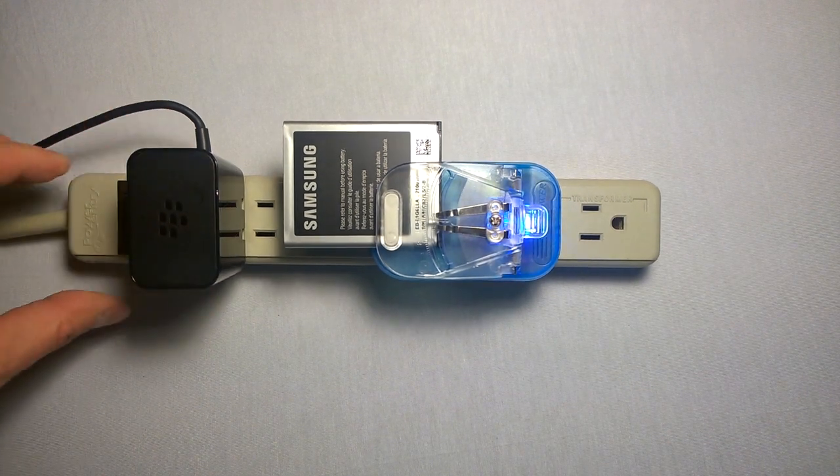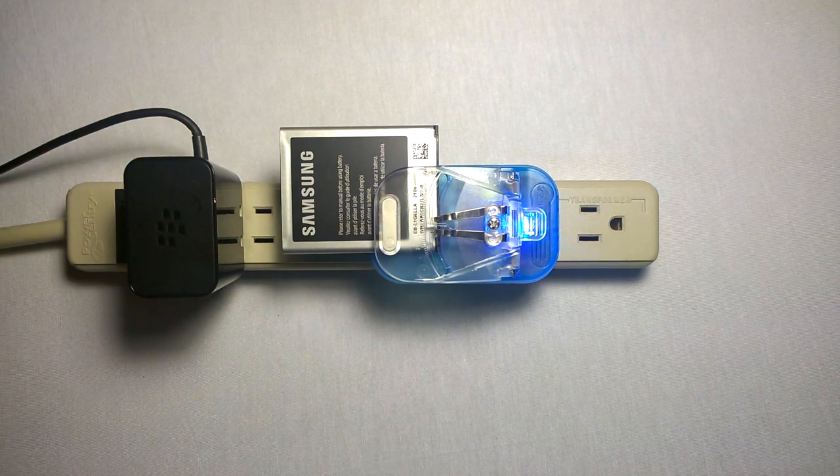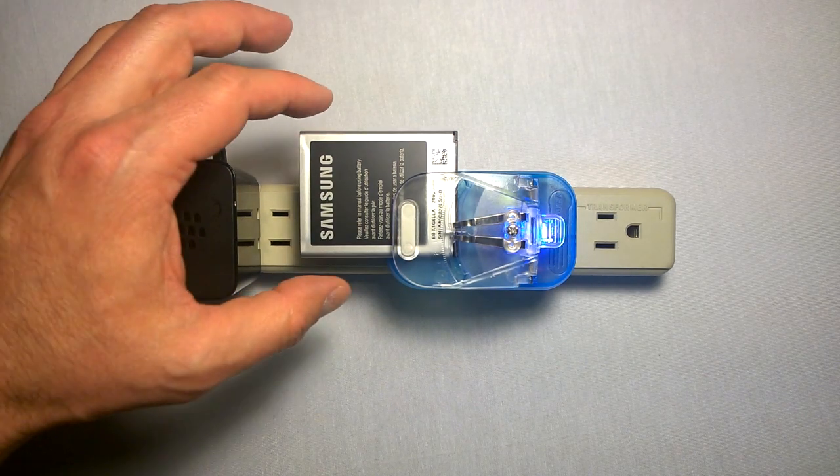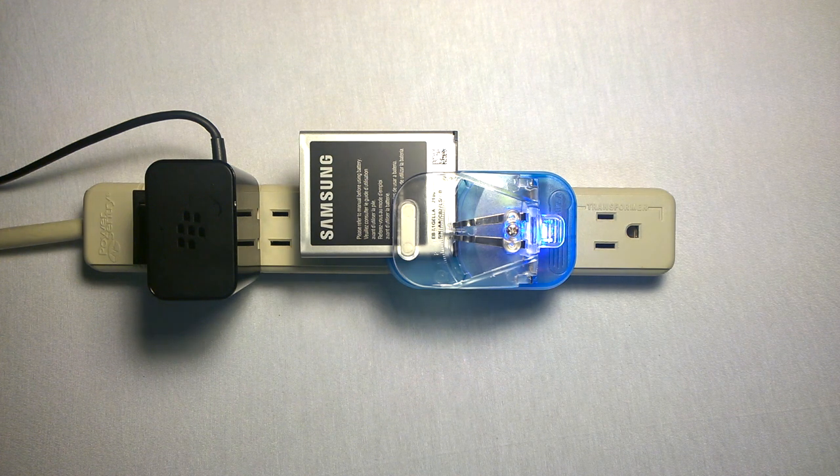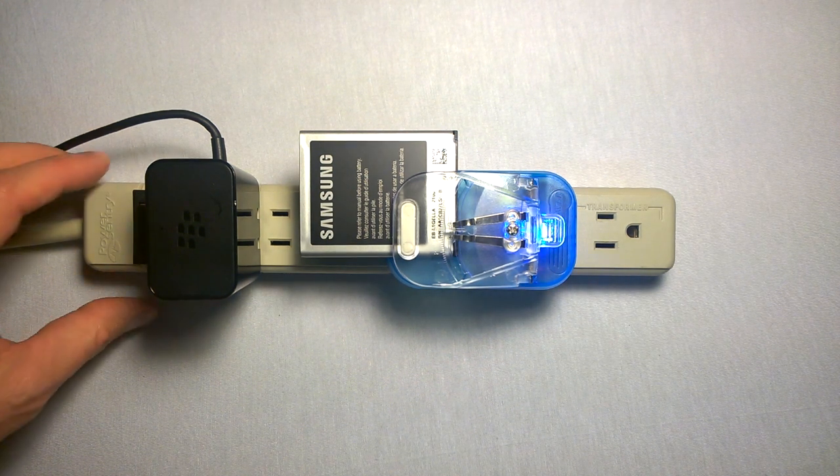One question that people ask quite often is, if I've got to take my battery out to charge it outside of the phone, what do I do in the meantime? The best solution usually is to just invest in another battery. That way you can have one on the charger, one in the phone and virtually no downtime. You never have to set your phone down to charge it. You've always got something charging or charged up.